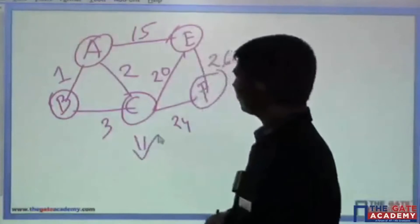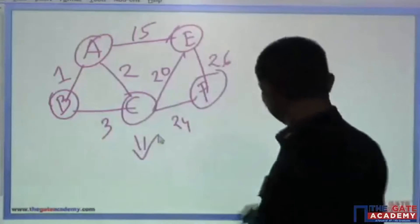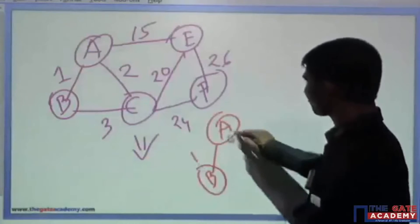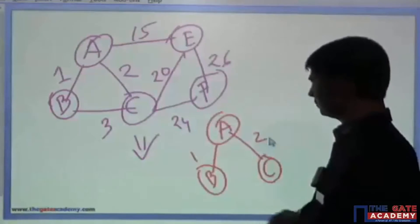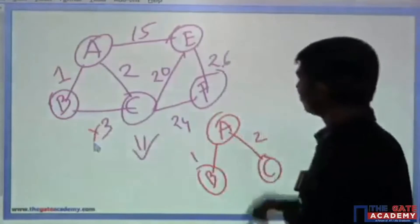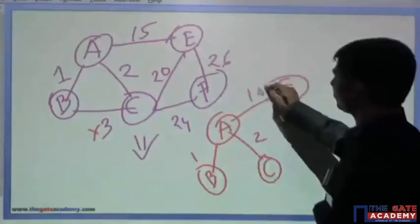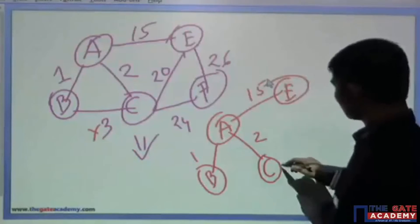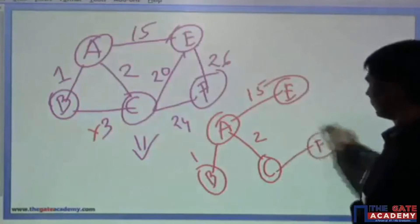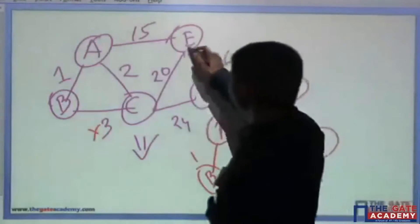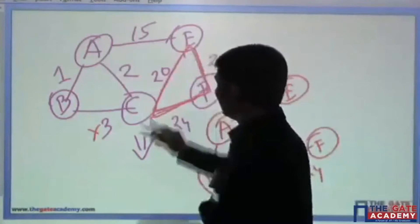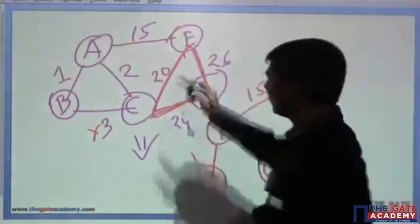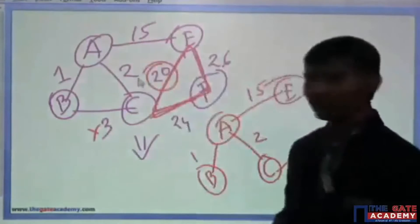If you draw the spanning tree of the corresponding graph, you will get: A to B is one, A to C is two — you will not select the edge that forms a cycle — then A to E is fifteen, and then you select C to F as twenty-four. Now look at this cycle: it has three edges with weights twenty, twenty-four, and twenty-six, and twenty is the smallest weight edge.